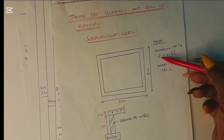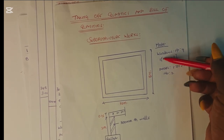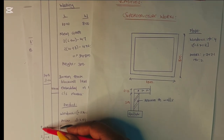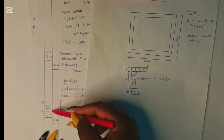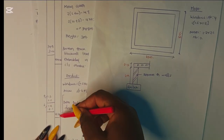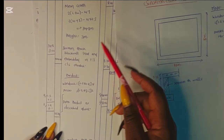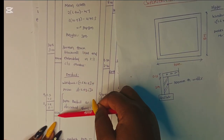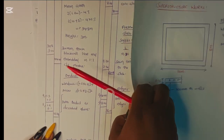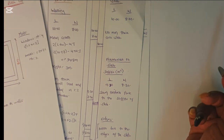The windows are 4 in number and the doors are 2, so we deduct these openings. That is 1.5 by 1.2 multiplied by 4 for the windows, and 1.2 by 2.1 multiplied by 2 for the doors, which gives us 12.24. When preparing the BoQ we subtract this to get the net quantity of the walls.